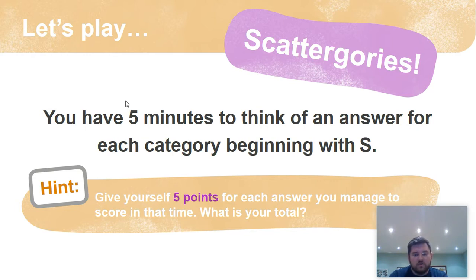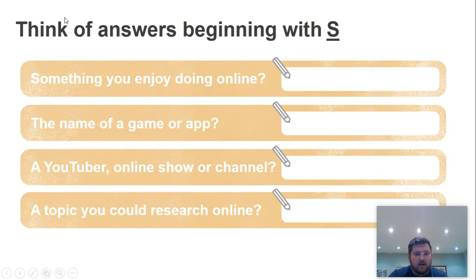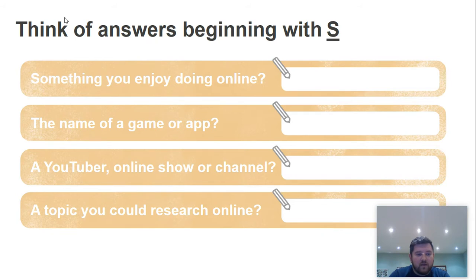You're going to need to pause the video where I show you what you're going to do so that you can use that time to have a go at the task. Each answer has to begin with S. The four questions are: something you enjoy doing online, the name of a game or app, a YouTuber, online show, or channel, and a topic you can research online. All four answers need to begin with the letter S for this round, but you can try any letter you want — just make sure all answers use the same letter.